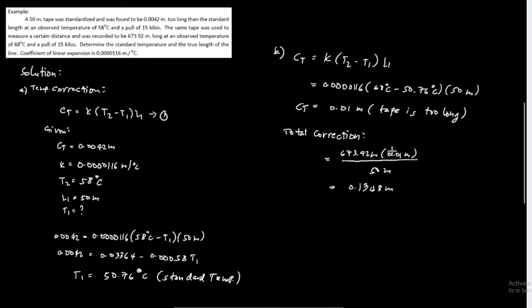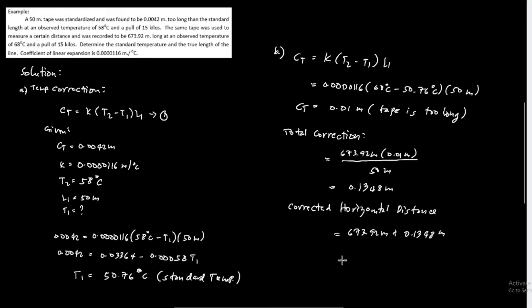The corrected horizontal distance is the recorded length of 673.92 meters plus the total correction of 0.1348 meter, giving a corrected horizontal distance of 674.055 meters. This is the actual corrected horizontal distance and the final answer.